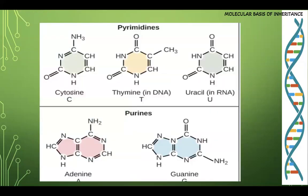Pyrimidines are cytosine, thymine and uracil. Thymine will be there in the DNA only and uracil will be there only in the RNA. Purines are adenine and guanine. What is the difference between both? Pyrimidines have six membered ring whereas purines have nine membered ring - two rings made up of nine members.